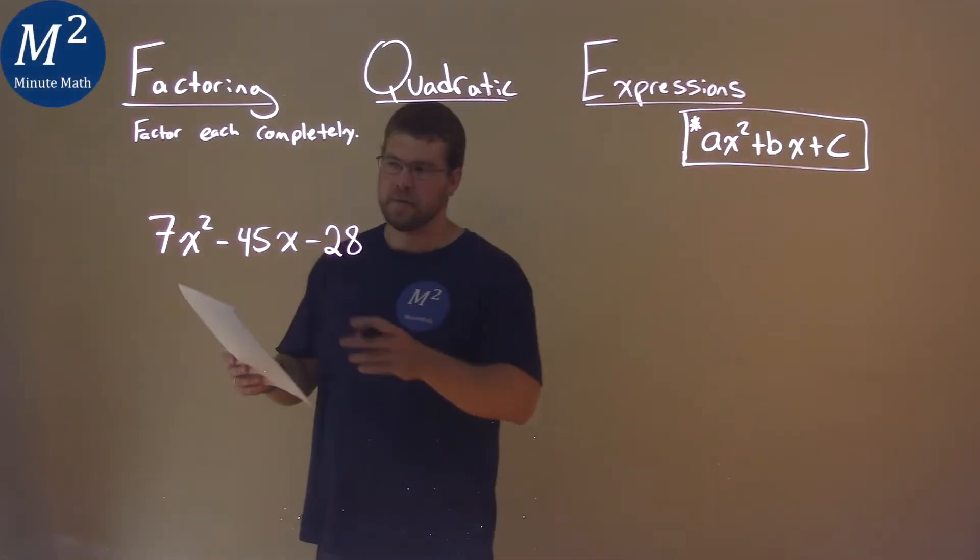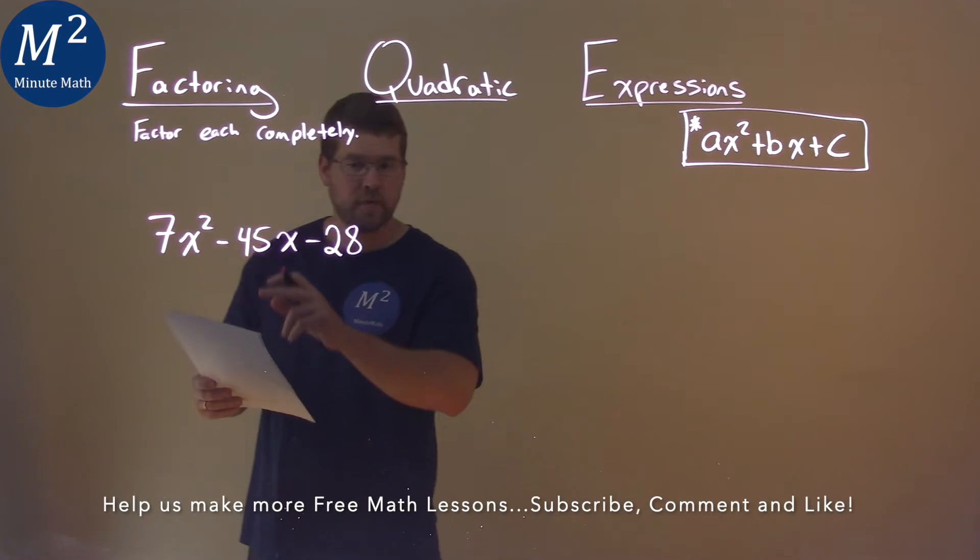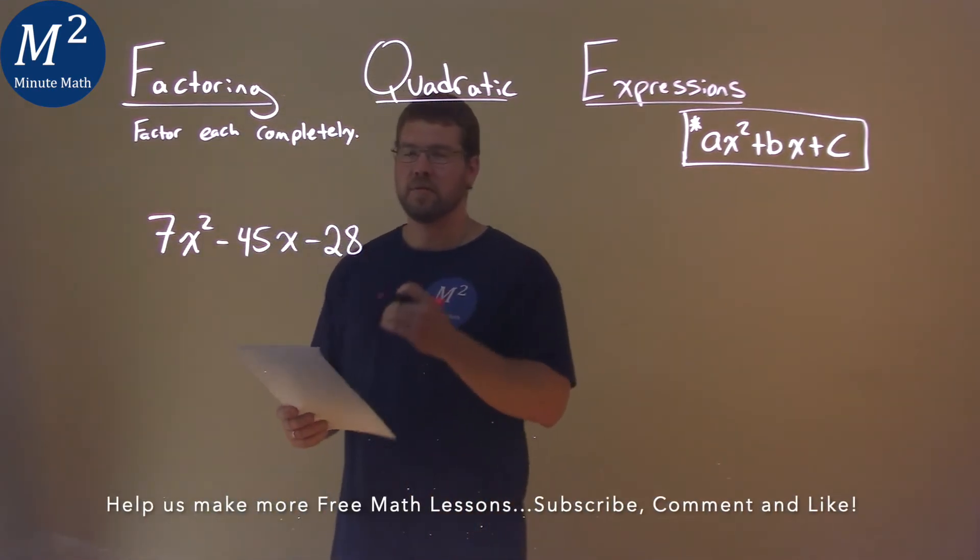We're given this problem right here: 7x² - 45x - 28, and we need to factor this completely.